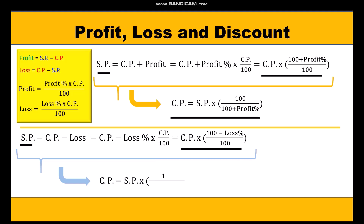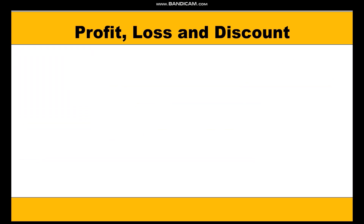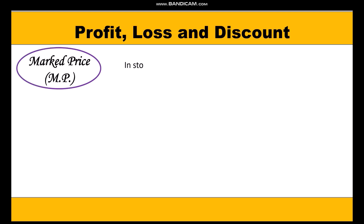To find cost price in the loss case: cost price = (selling price × 100) / (100 − loss percent). This is how we derive all the formulas related to cost price, selling price, profit, and loss. Now we come to marked price.